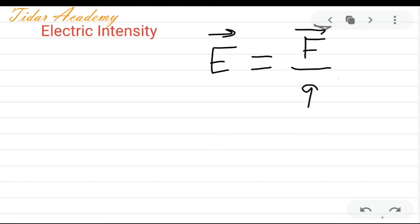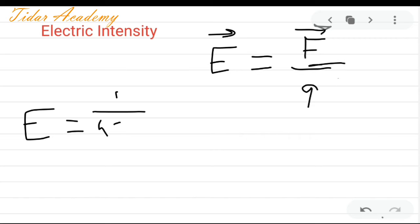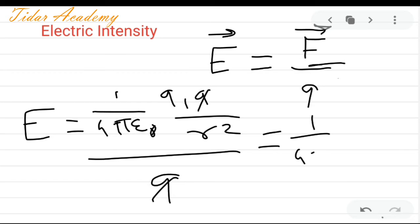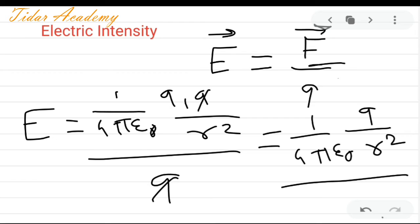Electric intensity is force per unit charge. The force is 1 upon 4 pi epsilon 0 times q1 times q2 upon r square. Dividing by charge q, the q gets cancelled, and we get E equals 1 upon 4 pi epsilon 0 times q upon r square. So this is our electric intensity formula.